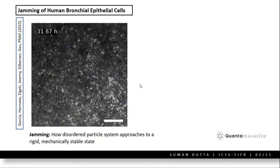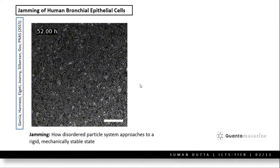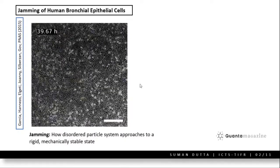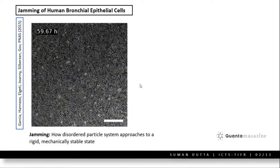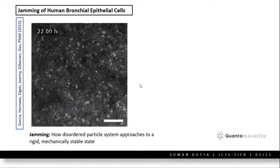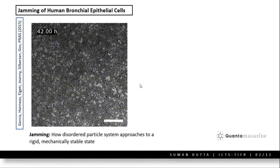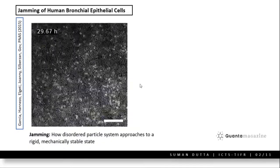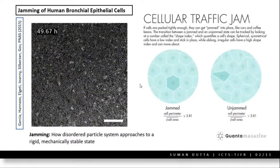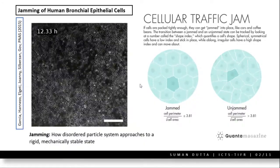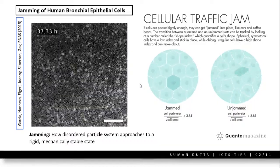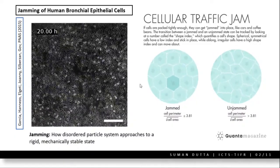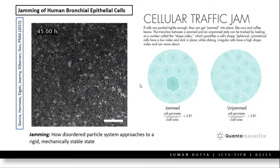Jamming is how things approach a rigid and mechanically stable state. This movie shows cell jamming: human bronchial epithelial cells (HBEC) initially in the liquid state, whose motion ceases and they get jammed. In the jammed state, cells only vibrate around their mean positions; in the unjammed state they are mobile. The transition we study is from the unjammed to the jammed state.